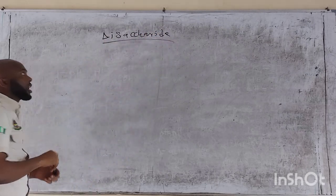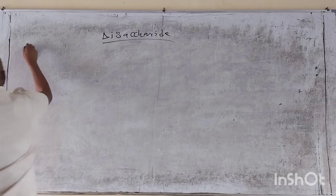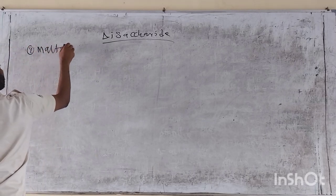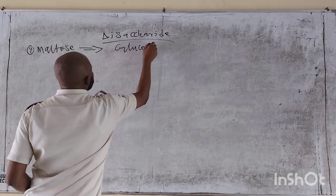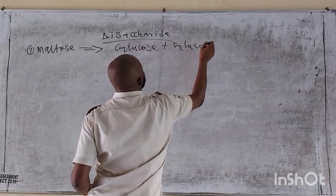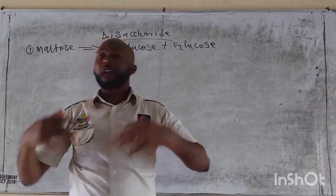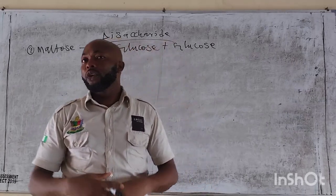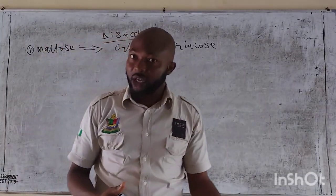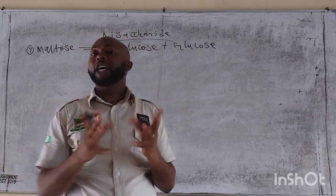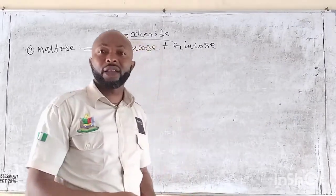Disaccharide has to do with two monomers. Let's take for example maltose as the first example. Maltose contains two molecules of glucose — glucose plus glucose gives us maltose. In order to bond them together we have to form the ring structure of glucose, which are the pyranoses.